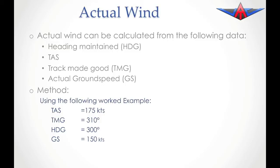Today we're going to have a look at how we can calculate actual wind based on knowing the heading, TAS, track made good, and actual ground speed. To illustrate this we're going to use an example where we have a TAS of 175 knots, track made good of 310 degrees while maintaining a heading of 300 degrees, and a ground speed of 150 knots.